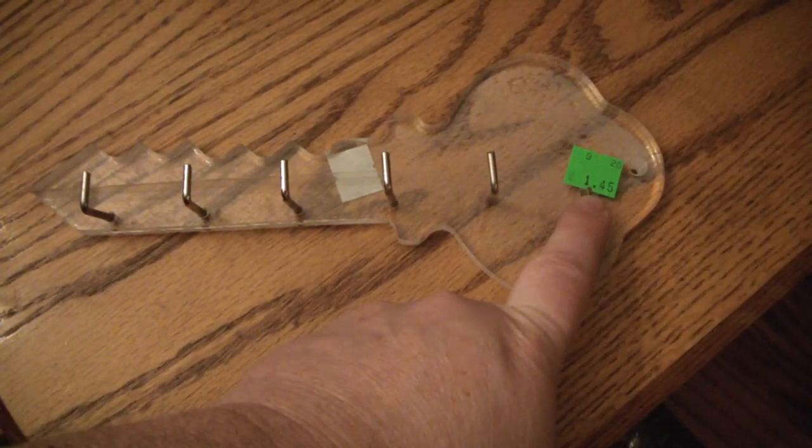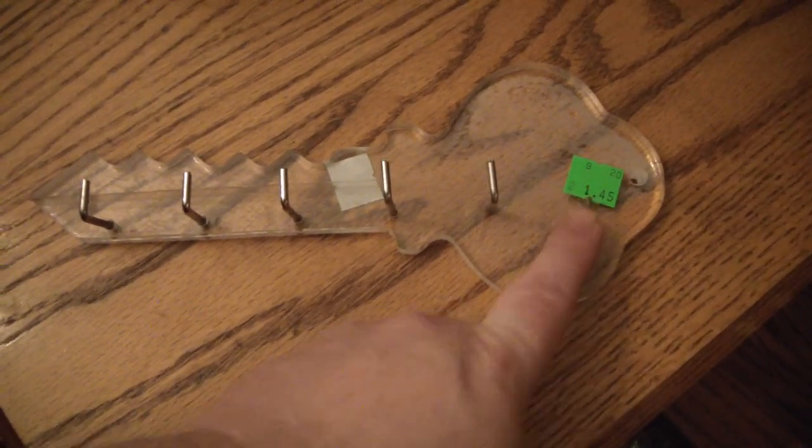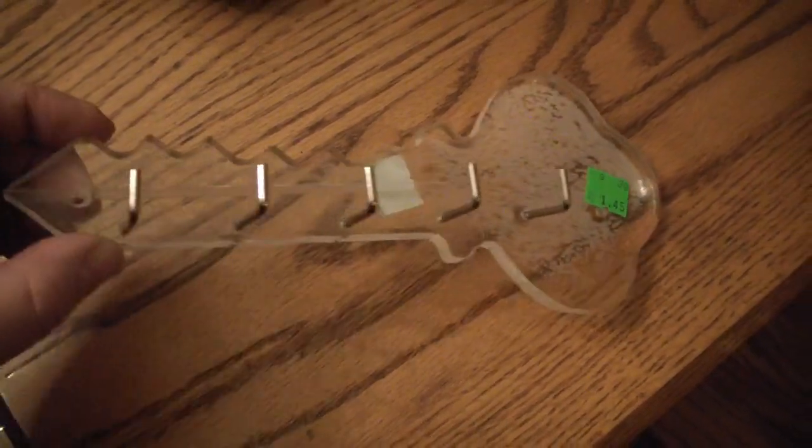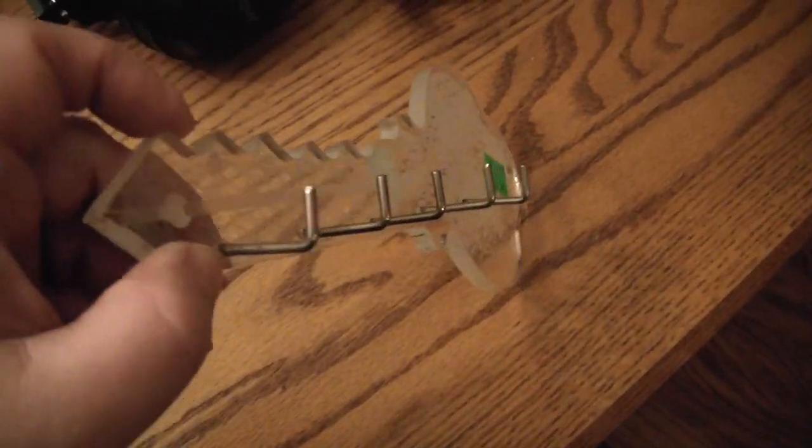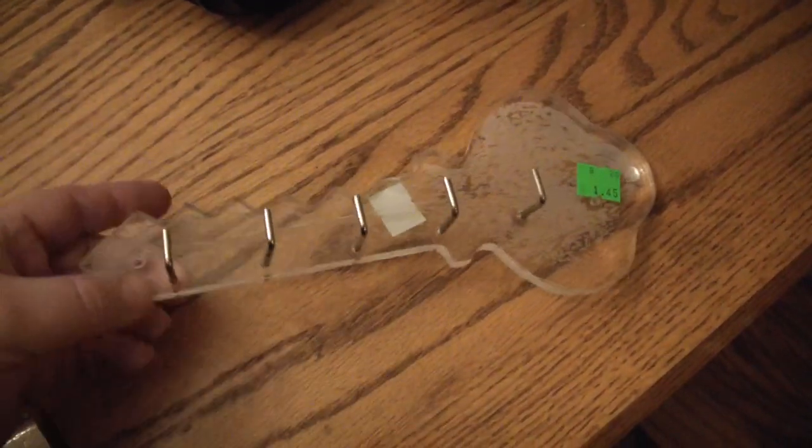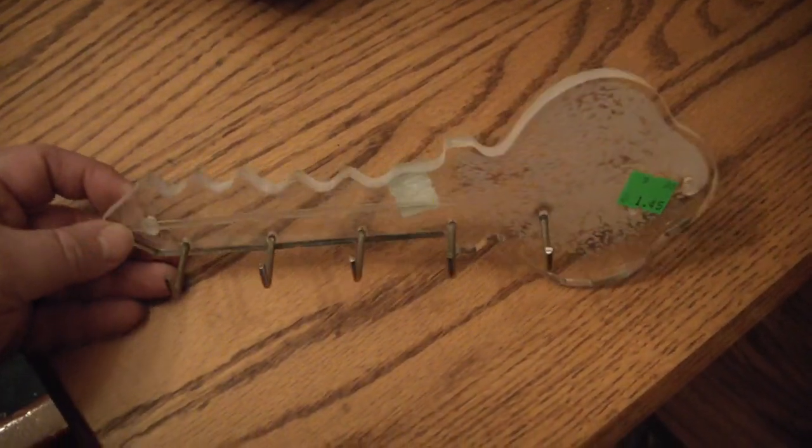It does have one hole stripped out, so it should have had another hook here, but it also has very long, deep hooks compared to my other keyboard. So it would be very easy to put your keys on and off these hooks and put big keychains on here.